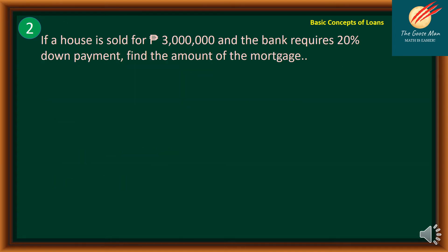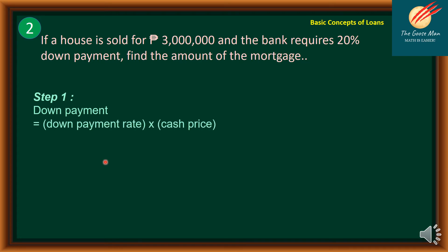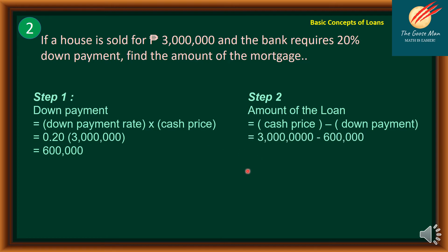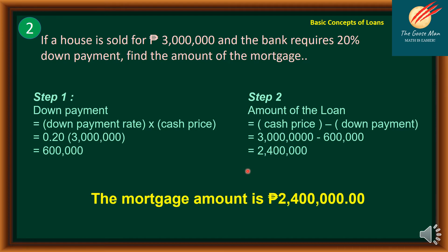Example 2: If a house is sold for 3,000,000 pesos and the bank requires a 20% down payment, find the amount of the mortgage. Down payment = 0.20 × 3,000,000 = 600,000 pesos. The amount of the loan = cash price − down payment = 3,000,000 − 600,000 = 2,400,000 pesos. Therefore, the mortgage amount is 2,400,000 pesos.